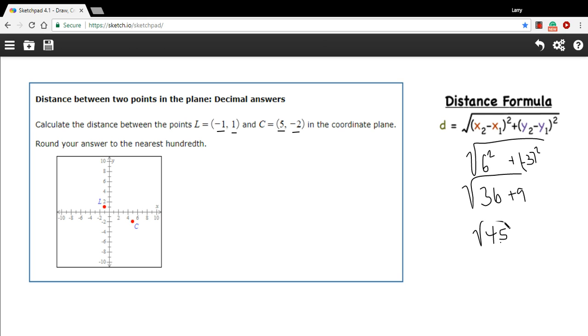And the square root of 45. Let's see, I'll need to pull out my calculator for that. So 45 square root. This looks like 6.71 to the nearest hundredth. So that is how to use the distance formula.